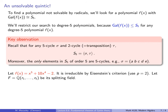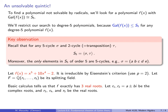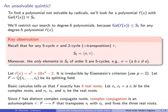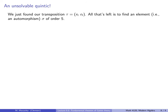This polynomial is irreducible by Eisenstein's criterion using p = 2: 2 divides all coefficients except the leading one, and 2² does not divide the constant coefficient. Let F be its splitting field — Q adjoined the five roots of this polynomial. Basic calculus tells us that f has exactly three real roots. Let R1 and R2 be the complex roots — A + Bi and A - Bi — and R3, R4, R5 be the real roots.